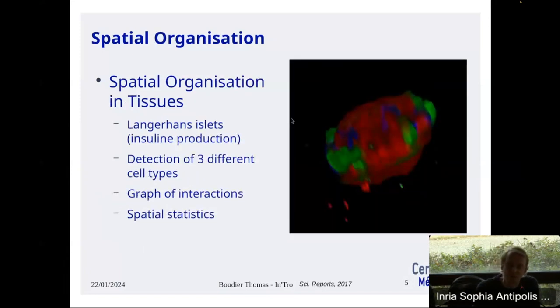This thing should turn also. Here's the islet of Langerhans. This mini organ is involved in the production of insulin, so it's quite important. When you have diabetes, there's a problem with this organ. In this organ, there are three types of cells: alpha, beta, gamma, or red, green, and blue. The question was: what happens if the organization of the cells is different? In two different species, monkey and mice, the organization is completely different, and the response to glycemia is completely different between monkey and mice.